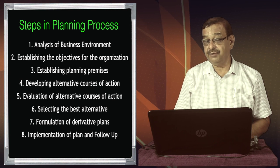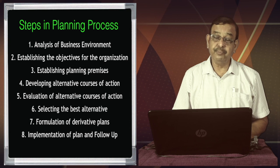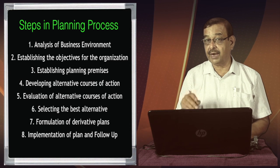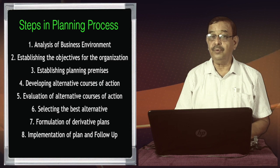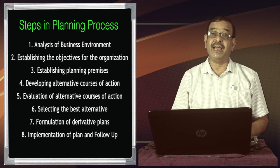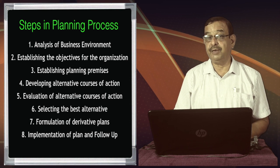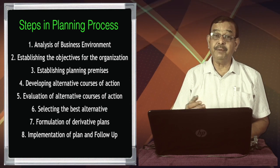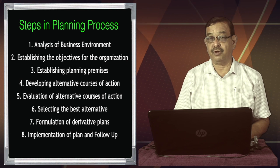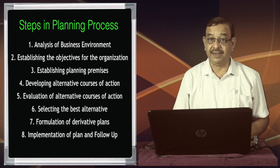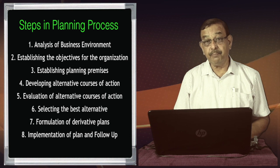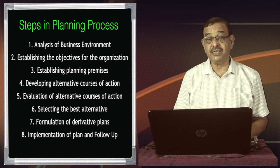After evaluation, we select the best alternative. Then we prepare supplementary plans. Once we are clear about the grand strategic plan — say, being very aggressive in marketing to achieve a 20% market share — we formulate supporting plans: a detailed advertising plan, a strategic sales promotion plan, and a strategic marketing action plan. These are all examples of supplementary plans. We then implement them and periodically monitor their progress.